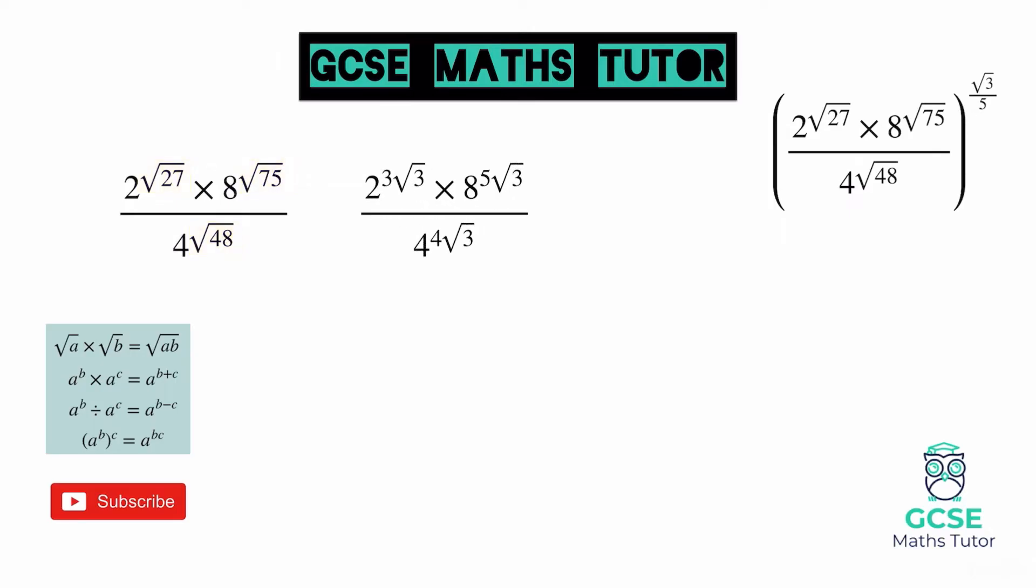2 to the power of 3 root 3, 8 to the power of 5 root 3, and 4 to the power of 4 root 3. Now we know that obviously we can add some of these powers together and subtract the powers in the fraction as long as the base numbers are the same. So let's focus on these two numbers, and we can turn them into a base number of 2. 8 is 2 cubed, and 4 is 2 to the power of 2, or 2 squared.